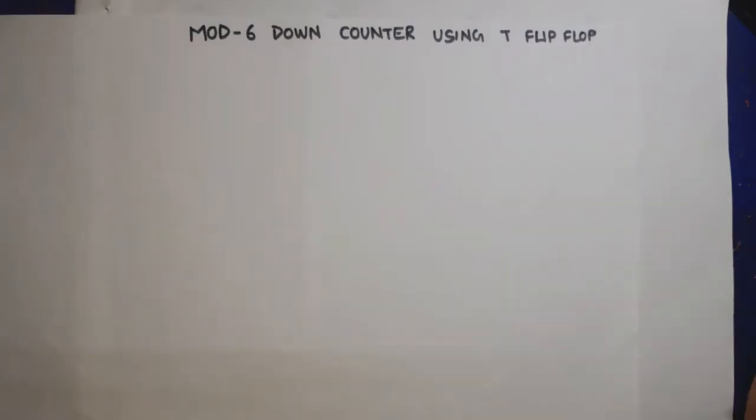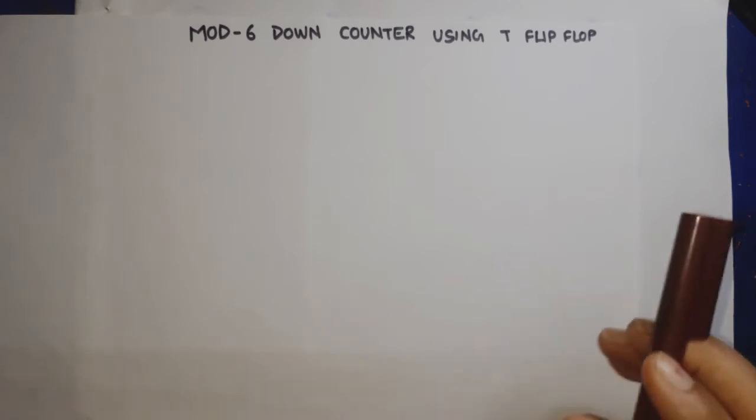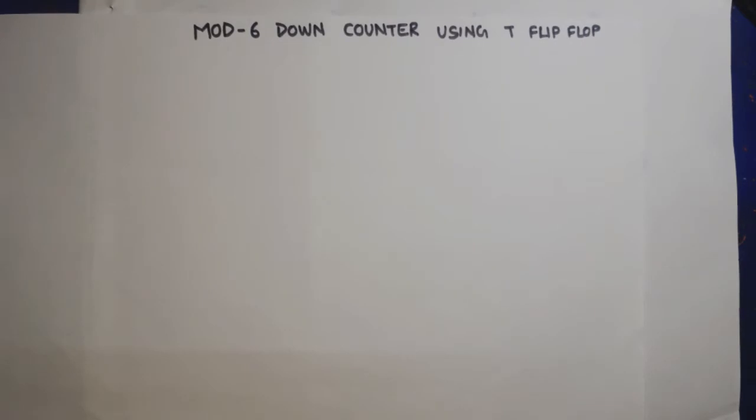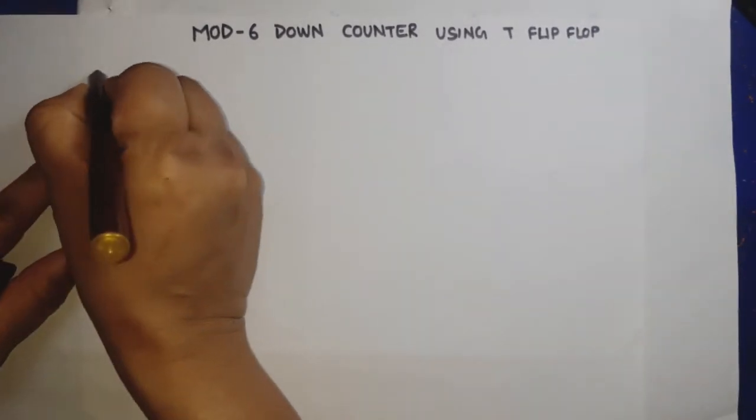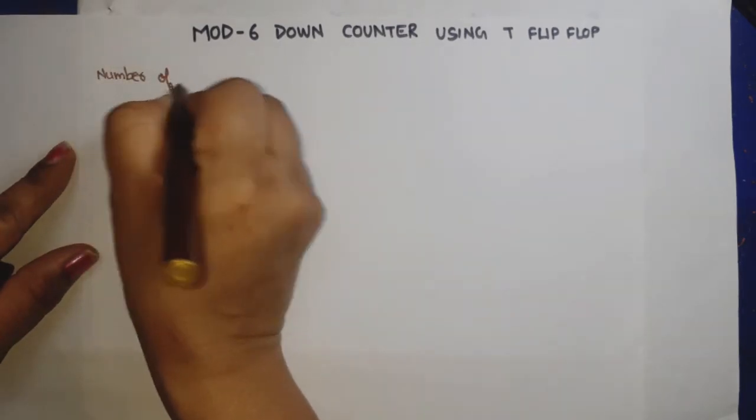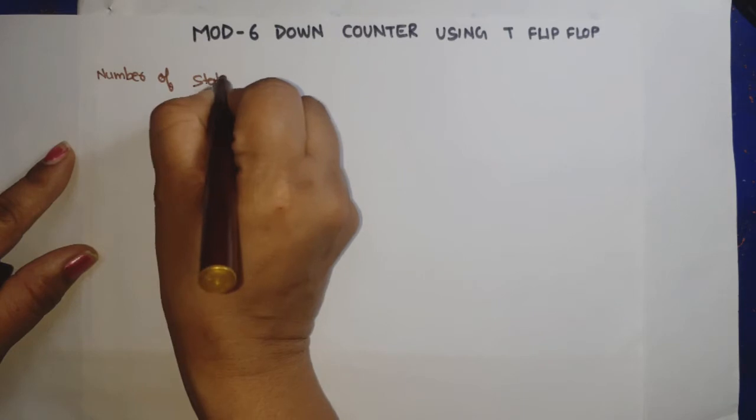Hello everyone, in this video of digital electronics I am going to design a mod-6 down counter using T flip-flop. Mod-6 counter means how many states can be counted by this counter. First, the number of states will be N is equal to 6.